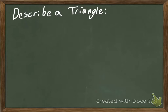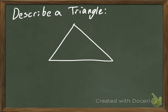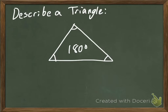Okay, the things that come to my mind when I think of a triangle: I think three sides. And I also think that all the angles have to add up to 180 degrees on the inside. Do you remember that from our polygons earlier in the year? So when I think of a triangle, that's the basic thing: three sides, all the angles add up to 180.